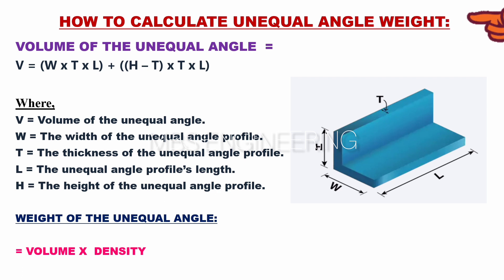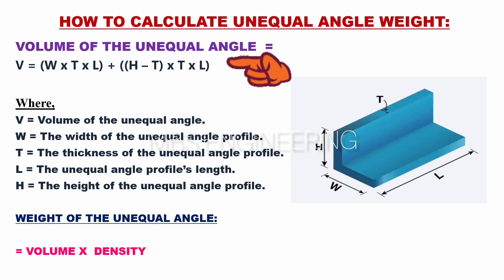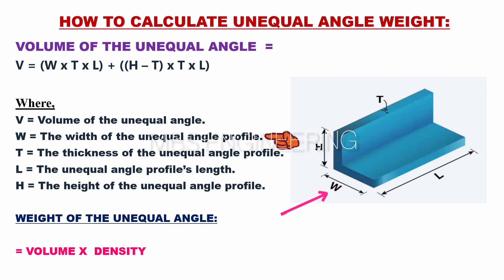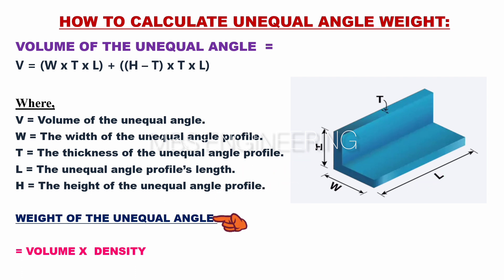Next, we learn about how to calculate the volume and weight of unequal angle materials. The formula for the volume of the unequal angle: V equals W×T×L plus (H minus T)×T×L. Where V is the volume of the unequal angle, W is the width, T is the thickness, L is the length, and H is the height of the unequal angle profile. The weight of the unequal angle equals volume multiplied by density.